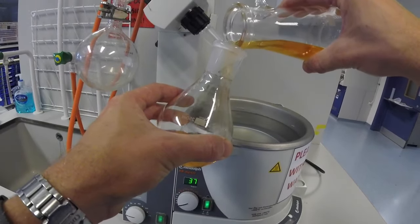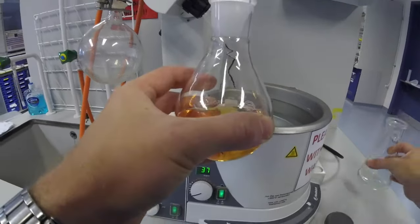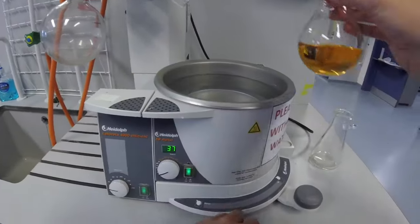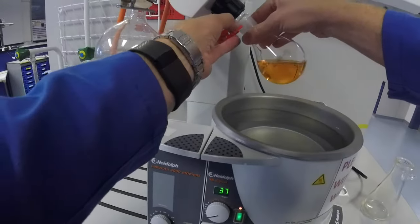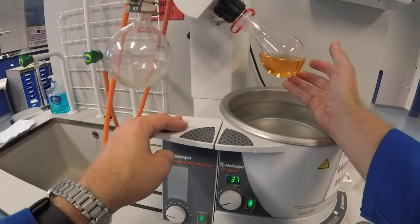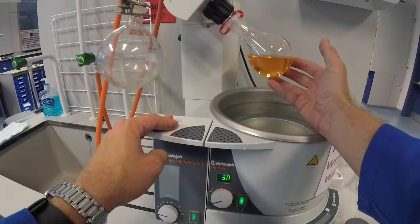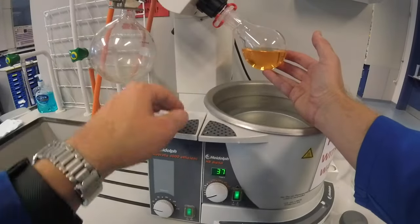So we're going to pour our compound into the flask and then we're going to carefully clip the flask in place. Be particularly careful with heavy solvents such as DCM because they are very dense and that can cause this to fall down.